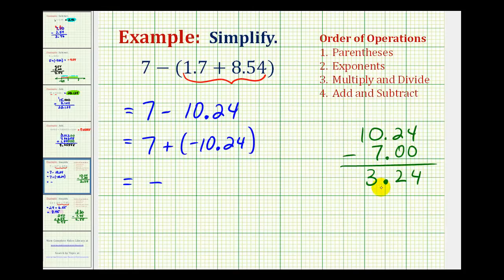So this difference is 3.24. But again, we know this sum has to be negative. So this simplifies to negative 3.24.